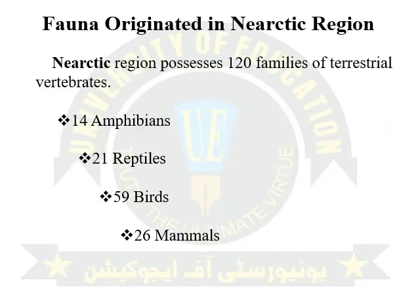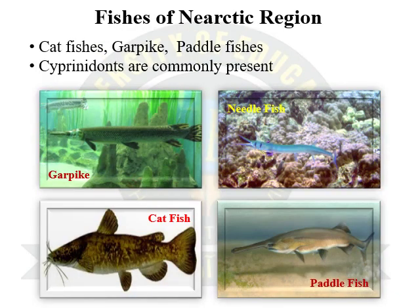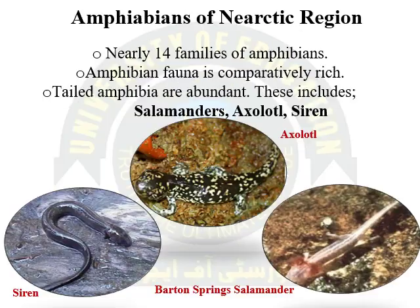The fauna of the Nearctic region is represented by 120 unique families, out of which 14 are amphibians, 21 families are of reptiles, 59 families are of birds, and 26 families are of mammals. Fishes of the Nearctic region include catfishes, gars, paddlefishes, and cyprinodonts, which are also commonly present here. Among the 14 families of amphibians, commonly present are salamanders, axolotl, and sirens.